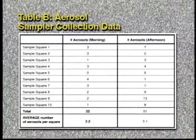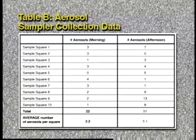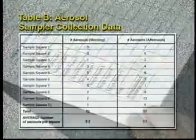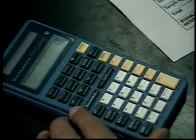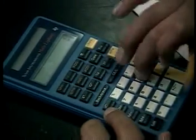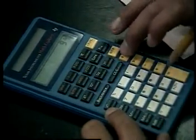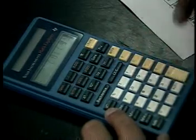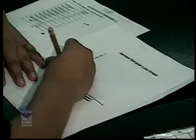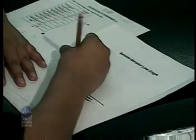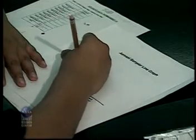Add up all the aerosols in the ten randomly selected squares to get a total. Next, divide the total number of aerosols by ten to get an average, or mean, of the aerosols per square. Repeat the procedure for the afternoon samples. After the average number of aerosols per square for each of the two samplers has been calculated, construct a line graph using the aerosol sampler line graph to compare the data.